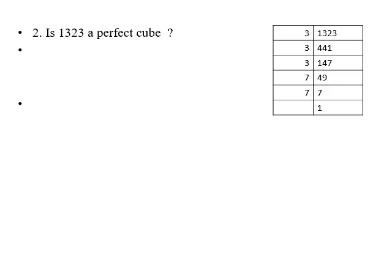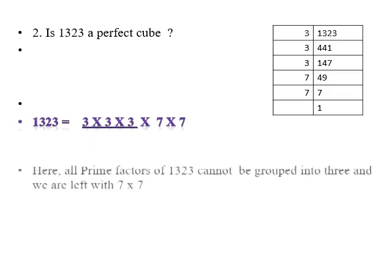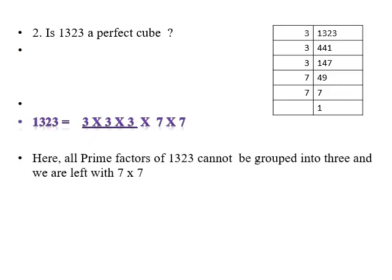49 is not divisible by 2, 4, 5, or 3, so we try 7. 7 divides 49 to give 7, and 7 divided by 7 gives 1. So the prime factors of 1323 are written out. If we form a group of 3, all the factors cannot be grouped into 3 — we are left with 7 × 7, meaning two 7s remain which don't form a group of 3.